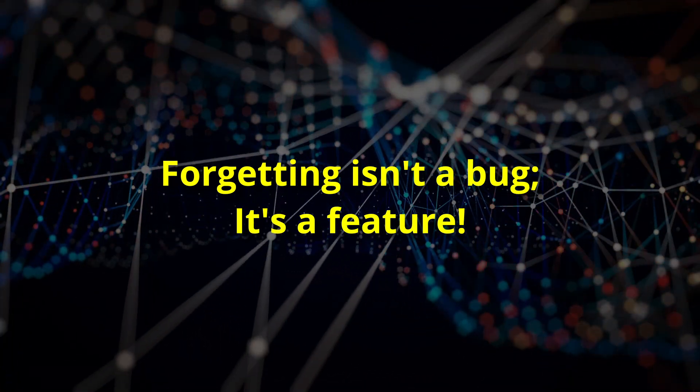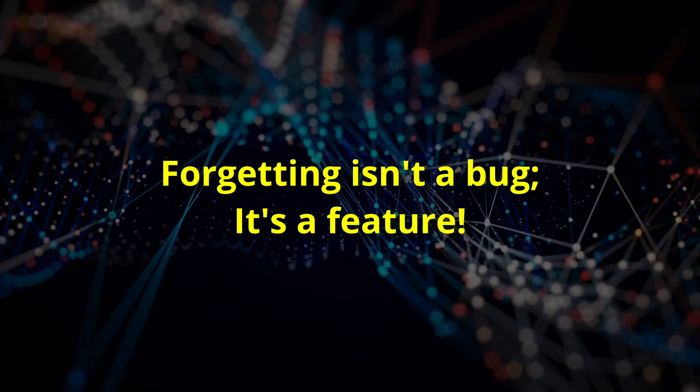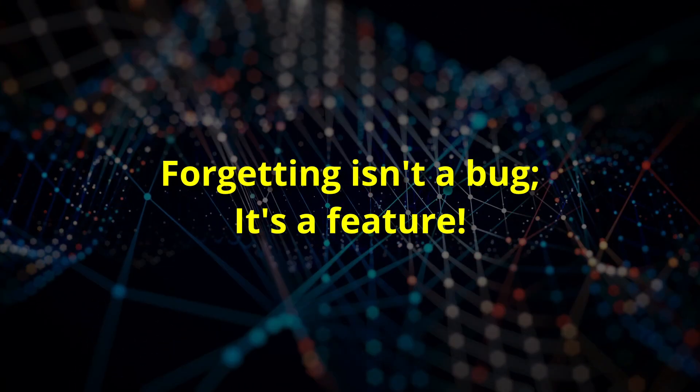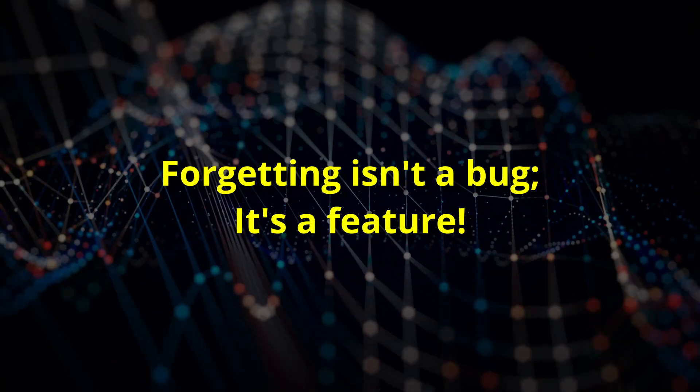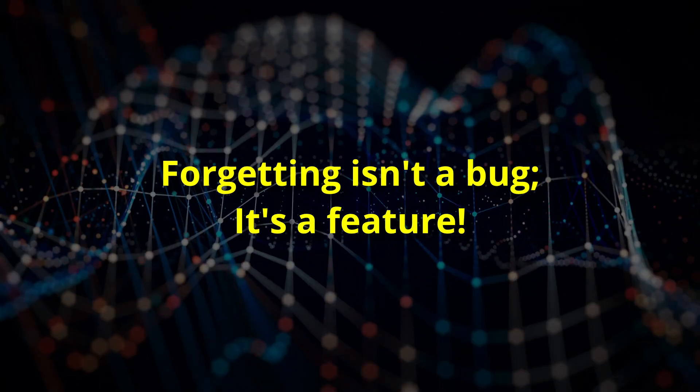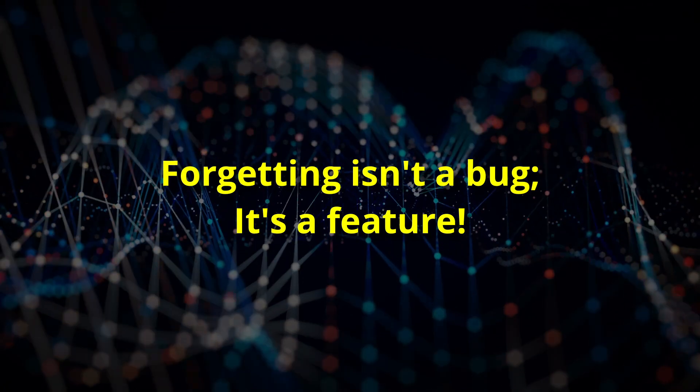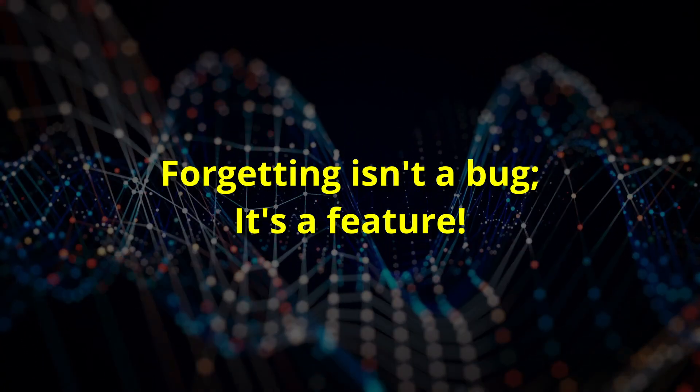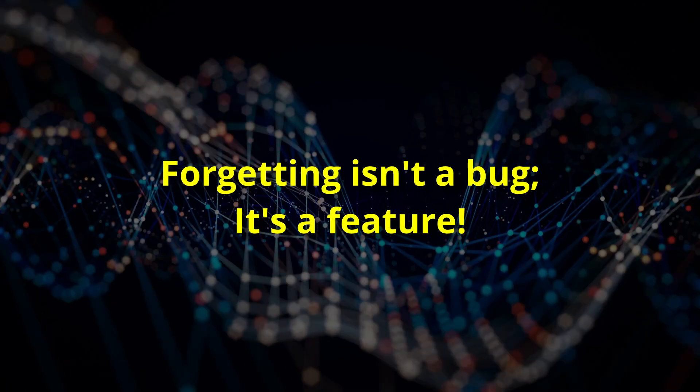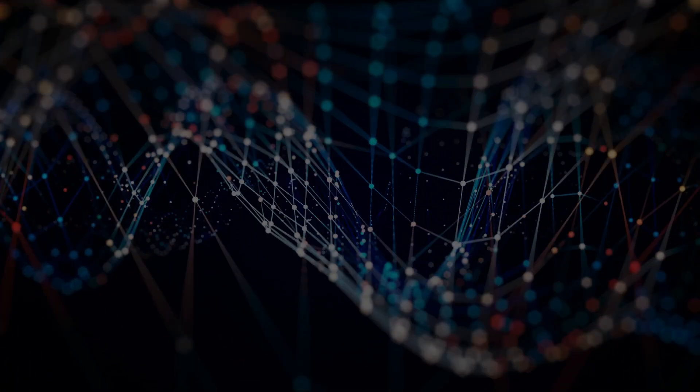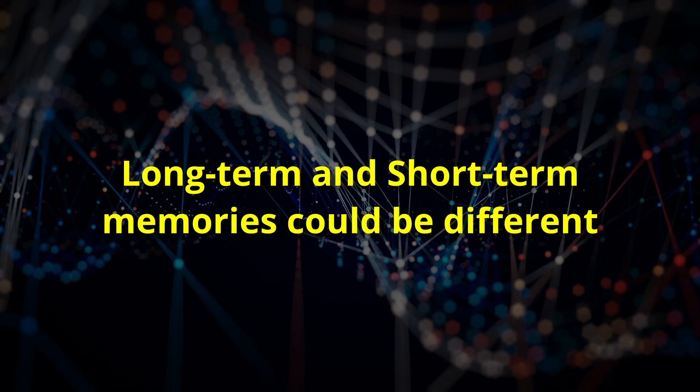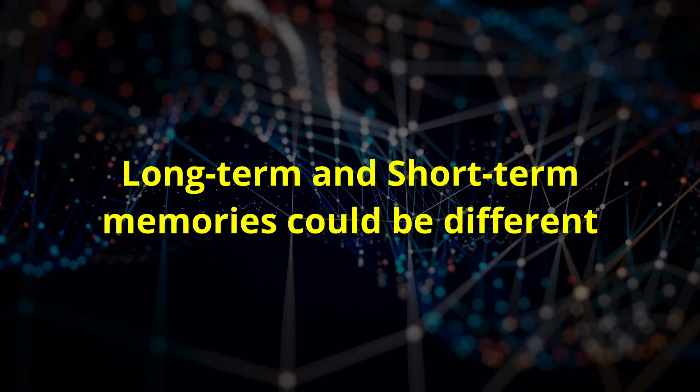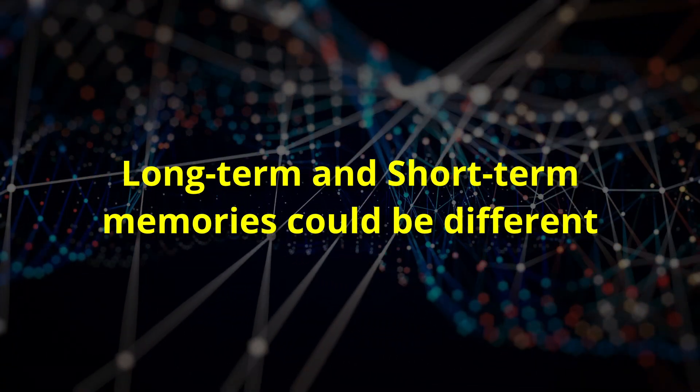Your brain isn't just passively storing data, it's actively managing resources. It discards what's unnecessary to make room for what matters. Forgetting isn't a bug, it's a feature. For memories your brain wants to keep, different mechanisms may come into play, which we can describe in another video.